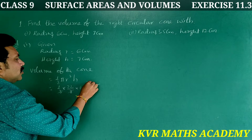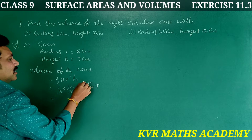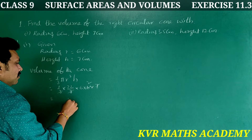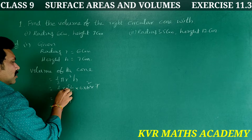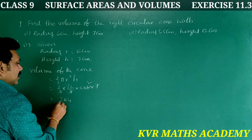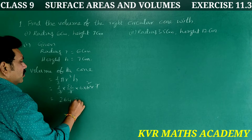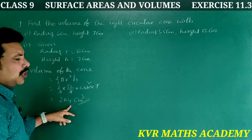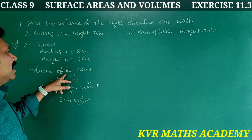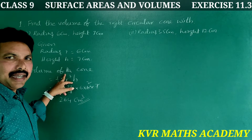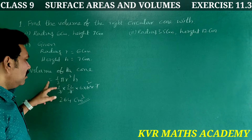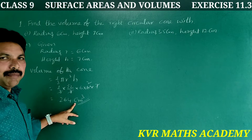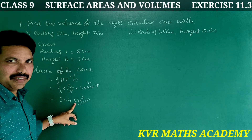After cancellation: 3 into 6 gives 2 times. 6 twos are 12, 12 twos are 24, giving 264. So the volume is 264 cm³. Note: area is in square units, volume is in cubic units, so the answer is in cm³.